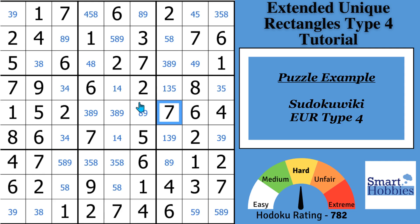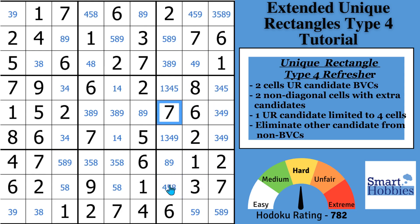So I pulled this example from Sudoku Wiki. I'm trying to make something you see on a website into an actionable video to help you understand EUR Type 4s. In order to understand them better, you first need to remember and know what a unique rectangle Type 4 is. So I'm going to switch to another puzzle where I remove a couple of these 4s to show you what a unique rectangle Type 4 is. Okay, you notice now the 4s are gone. Other than that, it's the same puzzle.